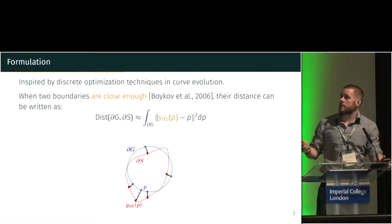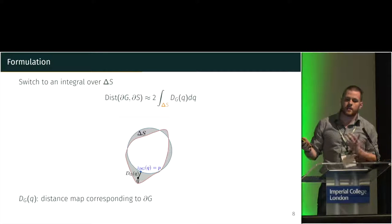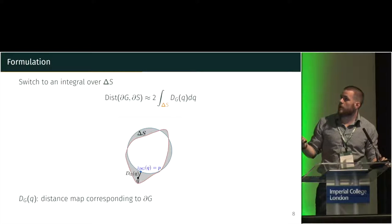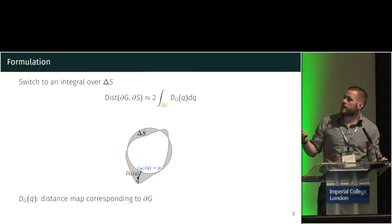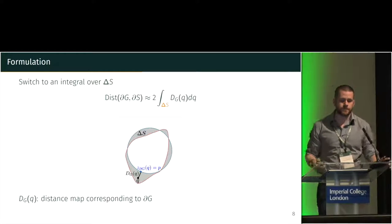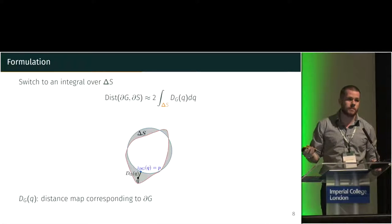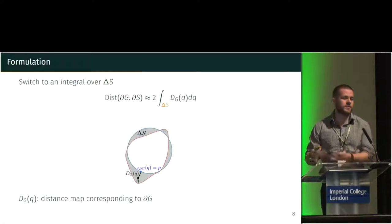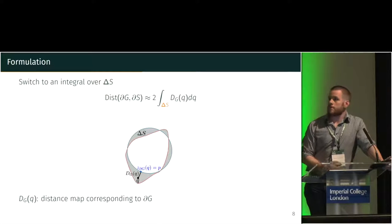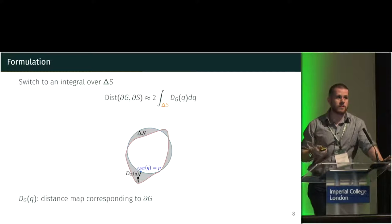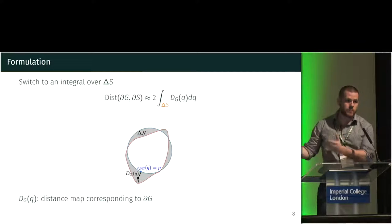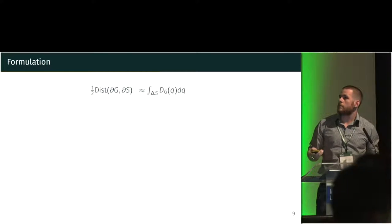It can be shown that this formulation can be expressed equivalently where instead of integrating over the boundary of G, we integrate over delta S — the area between the two curves — and integrate the function D_G, which is a distance map to the boundary of G. To define the area between the two boundaries we still need to define the second boundary, but this definition is easier to work with, and we will show how to transform it into something usable for training a neural network.